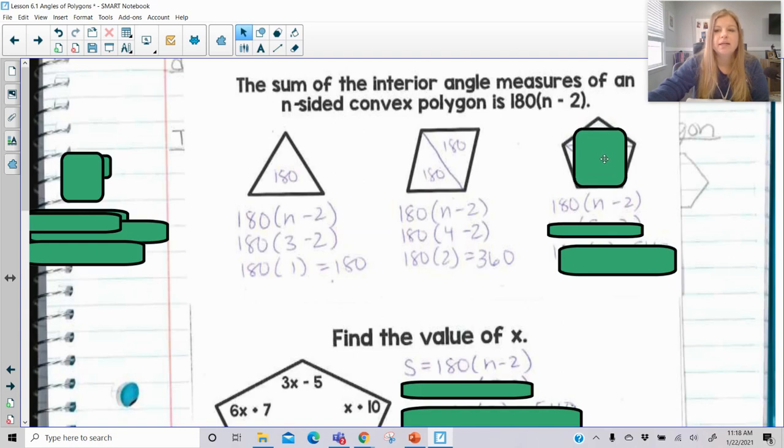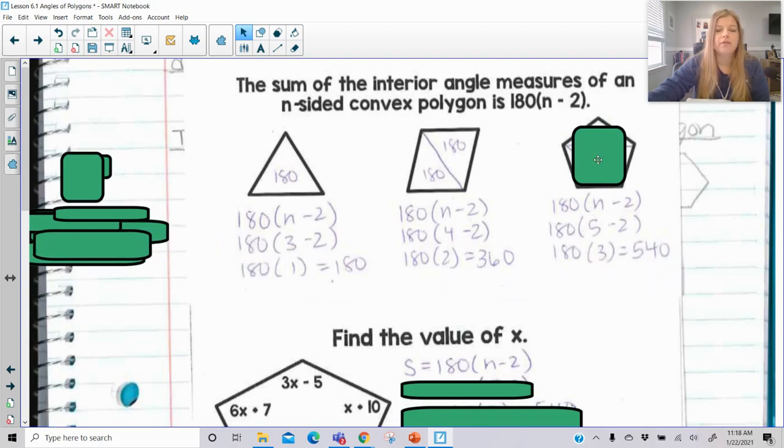So in this pentagon here, if I go ahead and I substitute in a five for n and I do five minus two is three, I end up getting that there's 540 degrees in a pentagon, which look, if I take a vertex of the pentagon and I draw the diagonals, one, two, just the two unique diagonals, it's divided up into three triangles, which three times 180 is that 540.